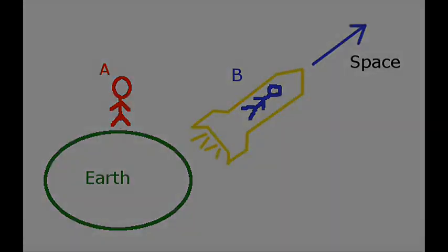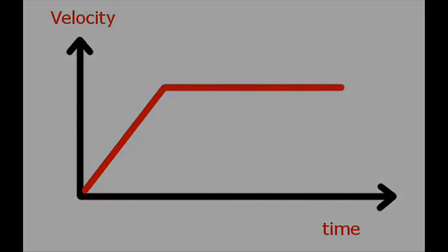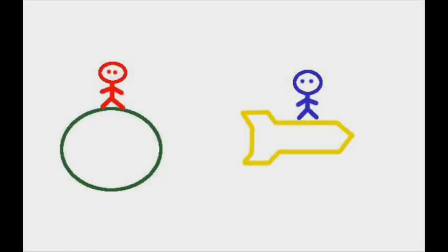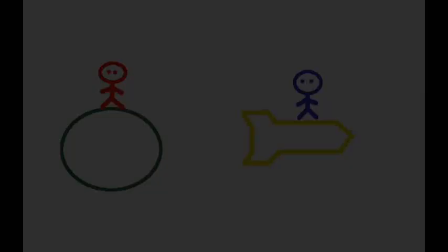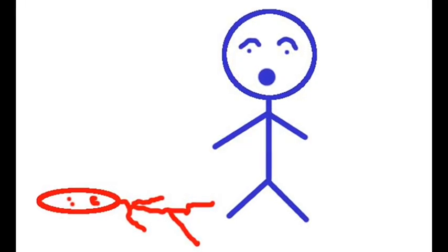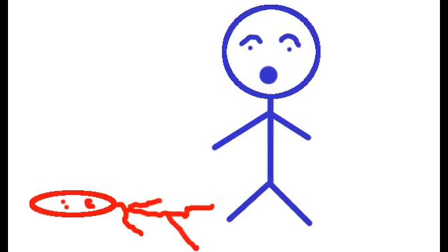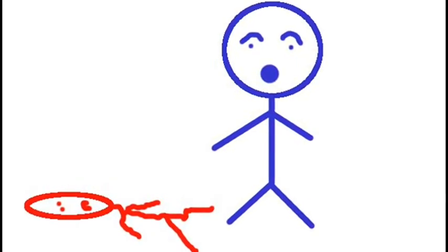After an initial period of acceleration, B cruises somewhere approaching the speed of light for some time. He then gets bored, turns his spaceship around and comes home. When he arrives back at Earth, he's somewhat shocked to find that his twin is dead, because, as far as I understand it, time has moved more slowly for twin B than it has for twin A.